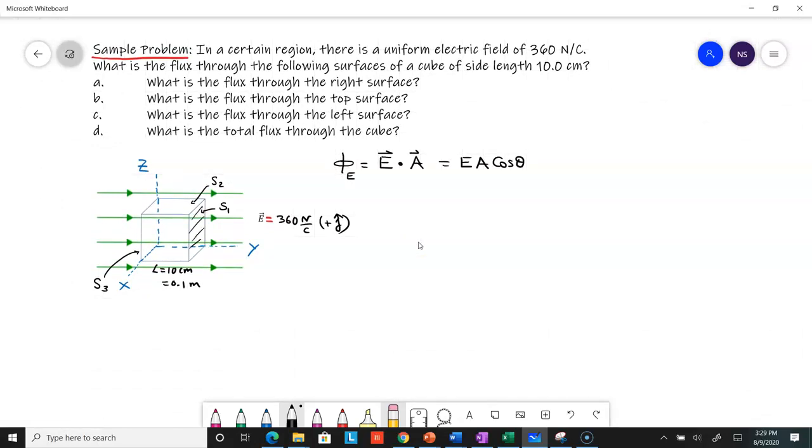That's the normal vector, which is also the direction of the area vector. Let me first use E·A·cosθ to calculate it.